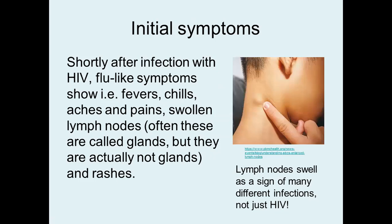Shortly after an individual becomes infected with HIV, they initially show flu-like symptoms: fevers, chills, aches, pains, and swollen lymph nodes. Lymph nodes — people often call them glands, but they're not actually glands. Lymph nodes swell as a sign of many different infections, not just HIV. So swollen lymph nodes don't necessarily mean that a person is infected with HIV. One of the initial symptoms shortly after infection may also be rashes, but not always.